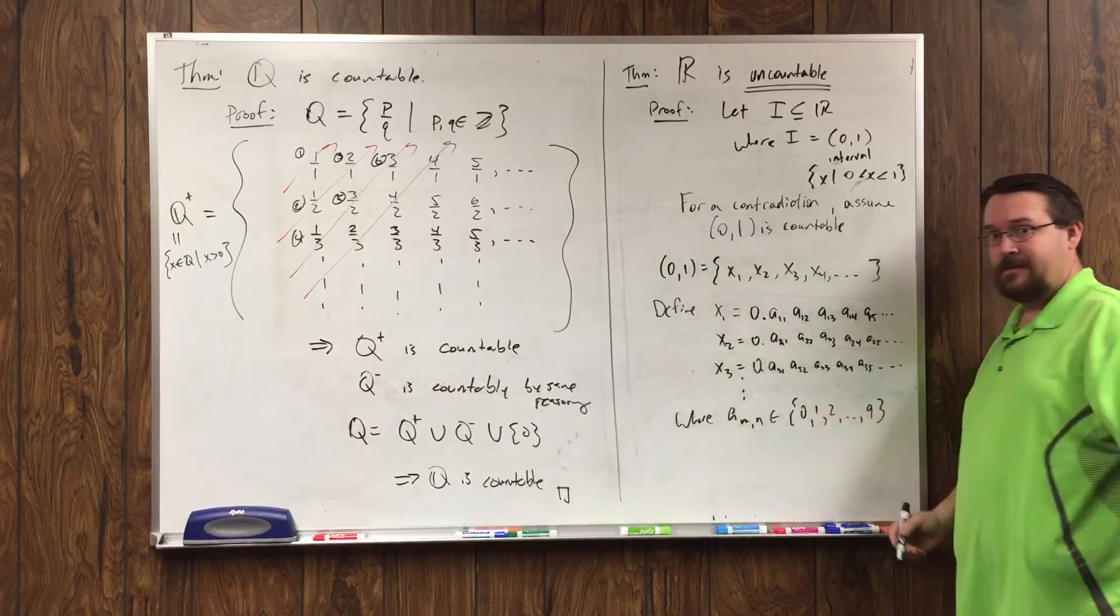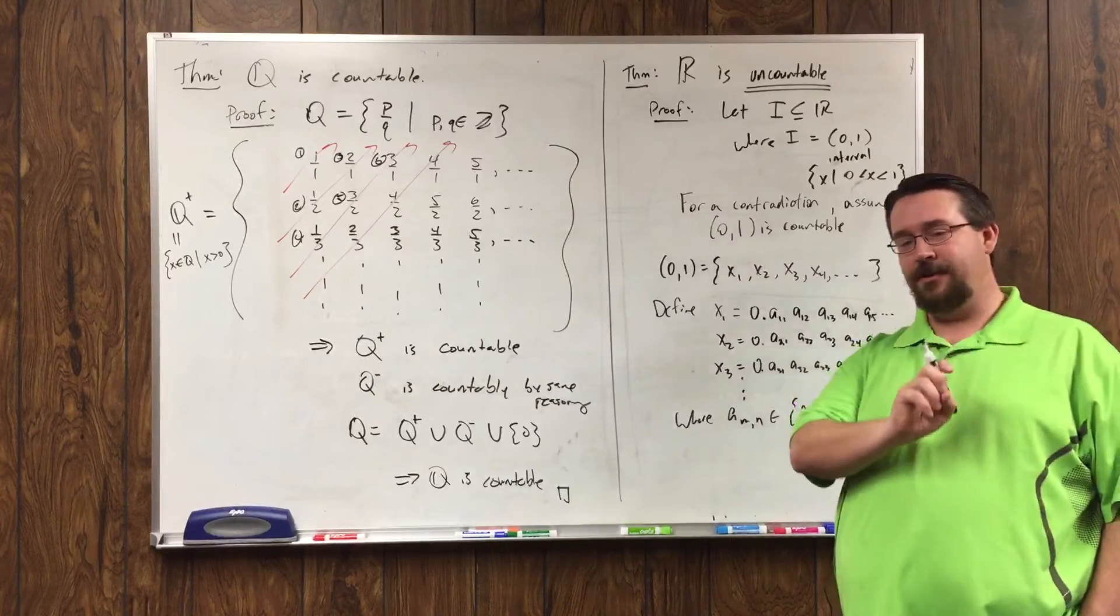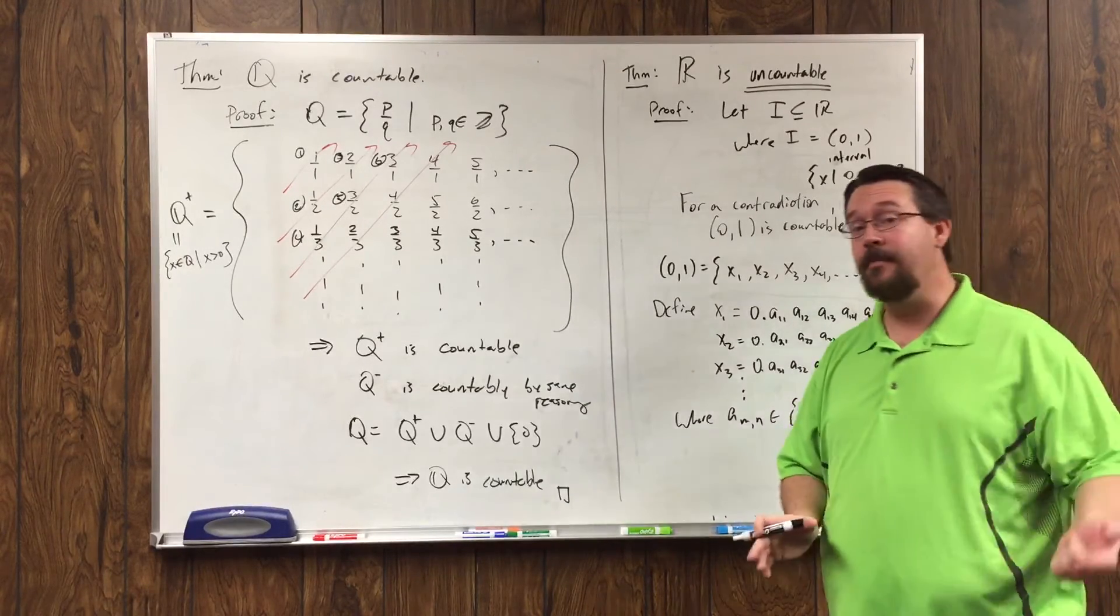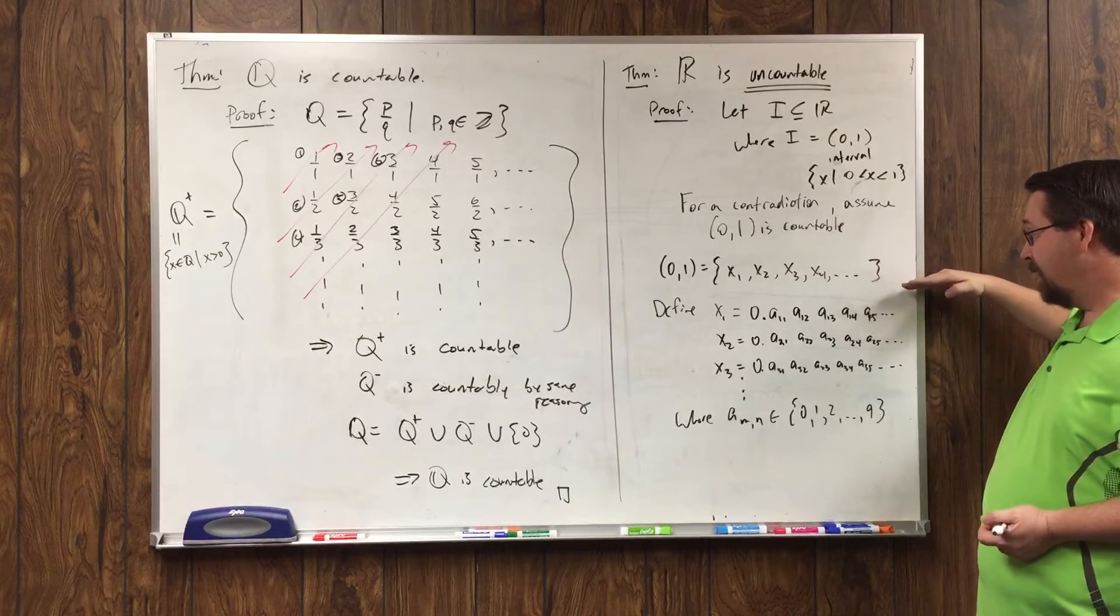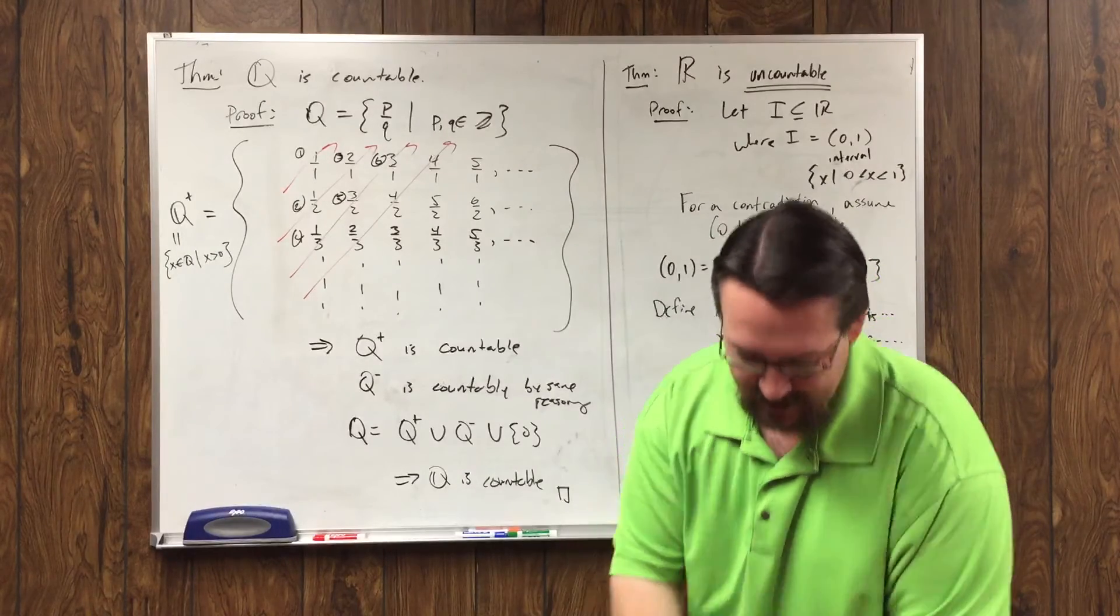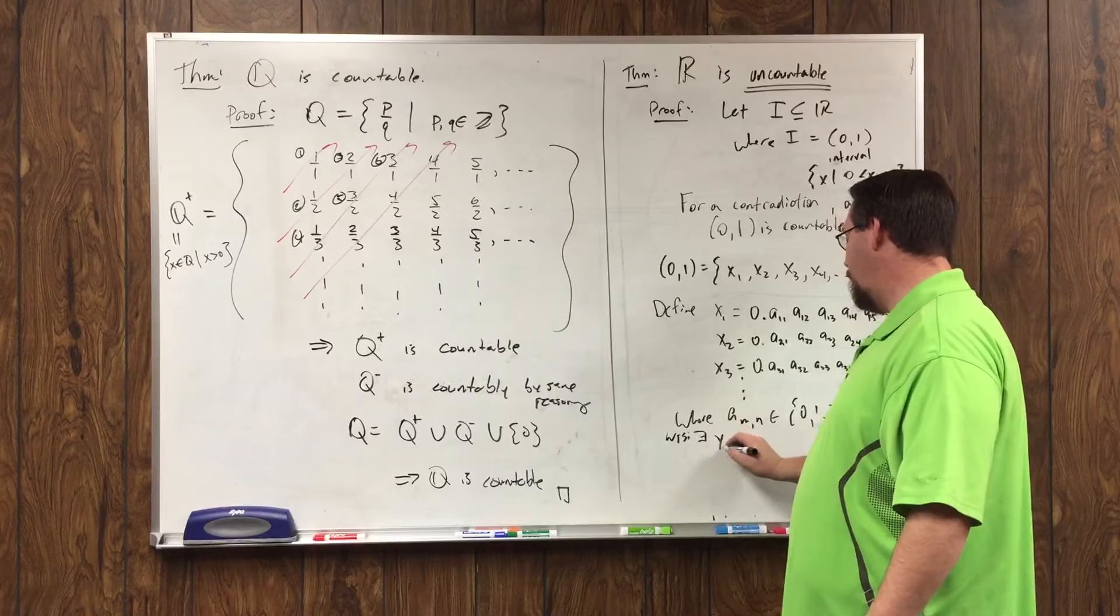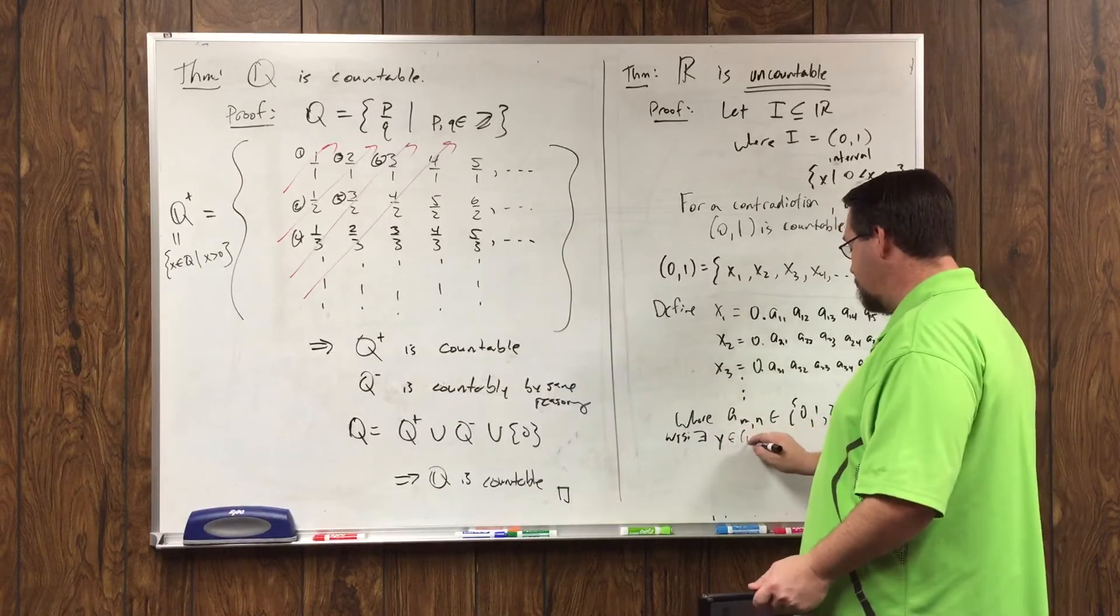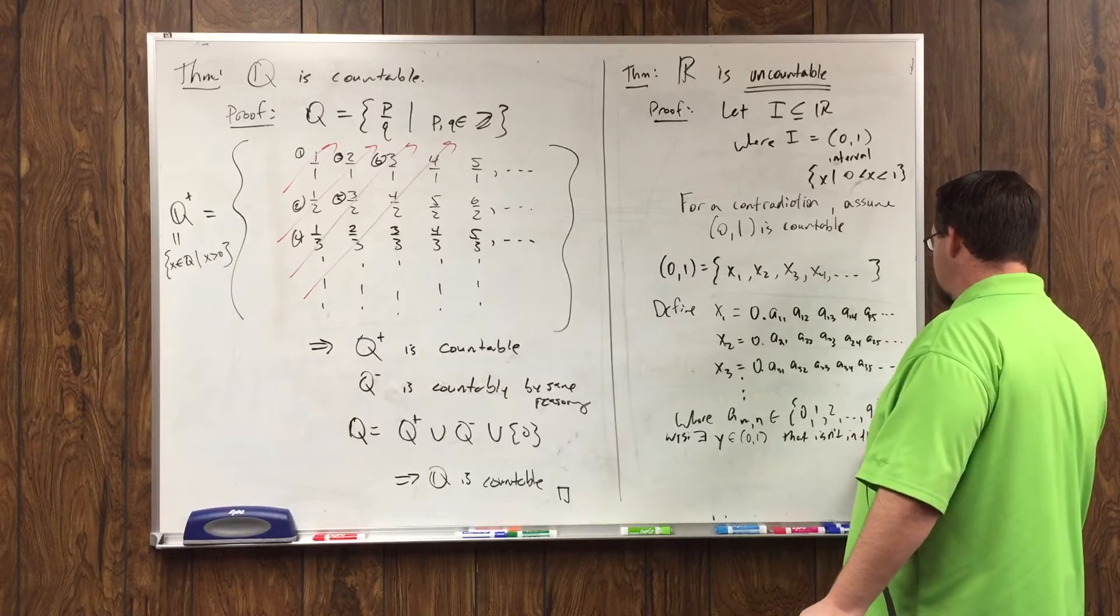Now, here's the trick. I claim it's impossible to include every real number this way, and that I can find a real number with a decimal expansion that is not in this list. So I've supposed or assumed it's countable, and now I'm going to show that no matter what this list is, there's a decimal number out there that's not in this list. So let's create that number, which I'll call y, which to show there exists a y out of (0,1) that isn't in this list.